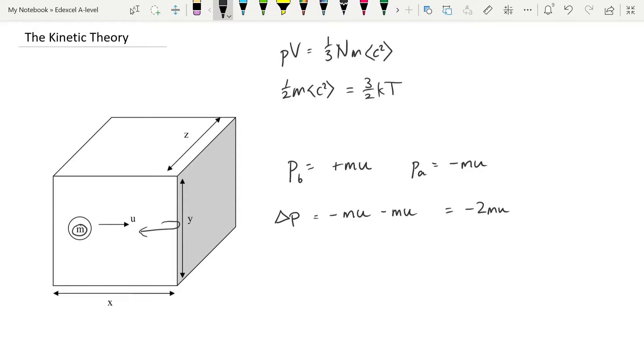Now we can take the absolute value of this, because we could have just as easily started with the particle on the right going left, and we'd have ended up with 2mu. So we're going to say, okay, delta p is the absolute value of that 2mu. So that's our first thing that we need.